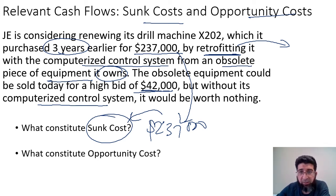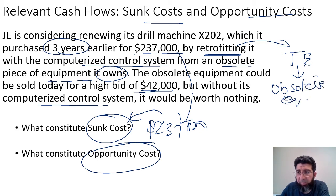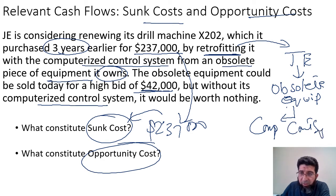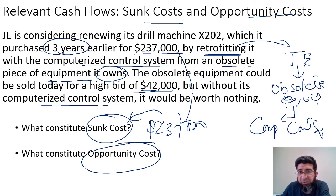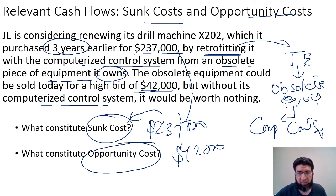The opportunity cost in this example arises from the obsolete equipment JE owns. That equipment has a computerized control system worth $42,000; without it, the obsolete equipment is worth zero. The proposed use of the computerized control system to retrofit X202 represents an opportunity cost of $42,000 — the highest price at which it could be sold today. This $42,000 should be included as a cash outflow in the project's incremental cash flows.